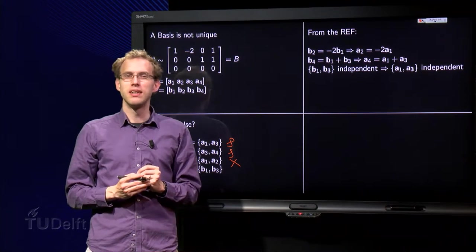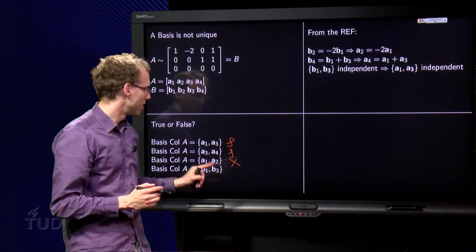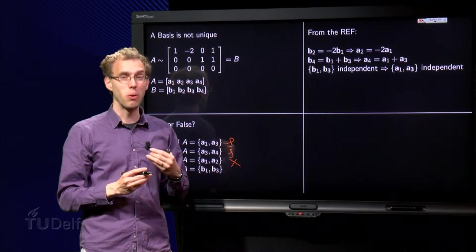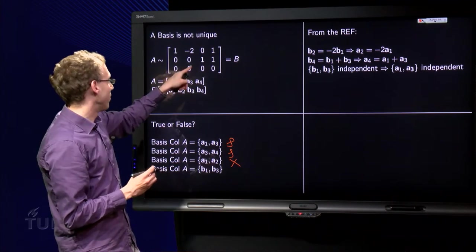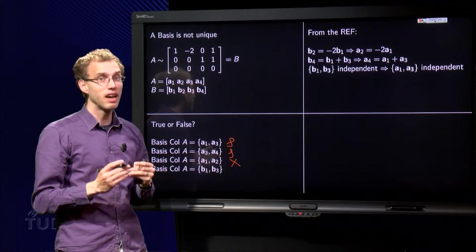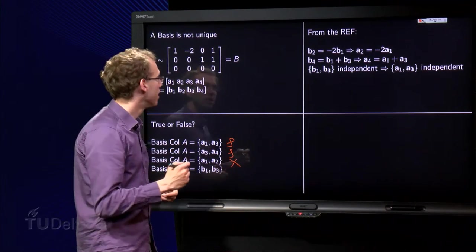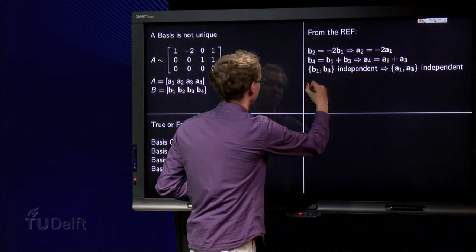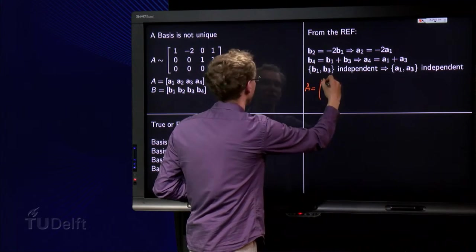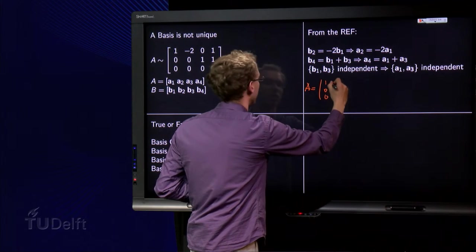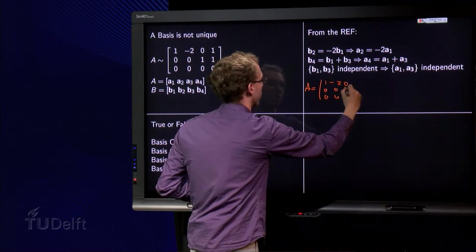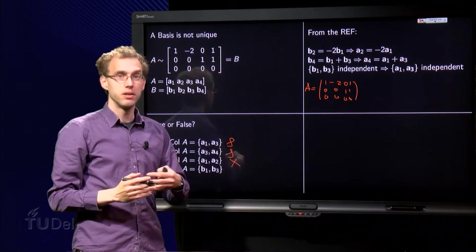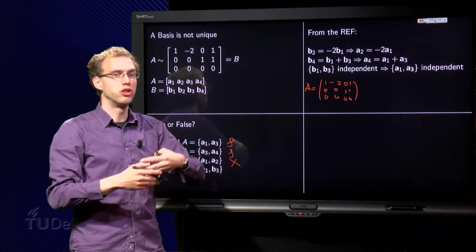This last one is a bit nasty. B1 and B3, can that be a basis for col A? Well, they are independent, but now you have to be careful because you don't have A. Suppose A would have been the same as B. So suppose A would have been, let's see, [1, 0, 0], [-2, 0, 0], [0, 1, 0], and [1, 1, 0]. In that case, when you do row reduction, of course you just get B, so you get the same one.